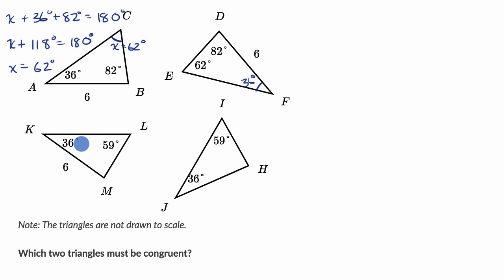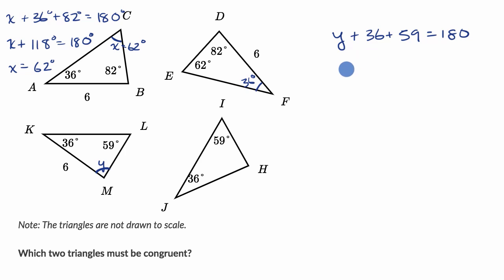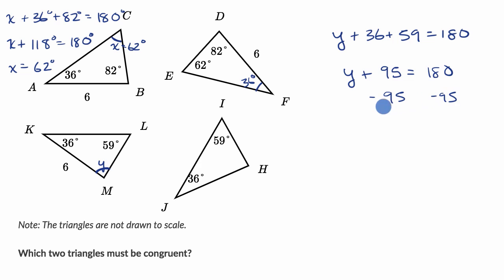Looking over here at triangle LMK, we have 36 degrees and 59 degrees — that looks like different angles. If we call the third angle Y, then Y plus 36 plus 59 equals 180. So Y plus 95 equals 180, and subtracting 95 from both sides gives Y equal to 85 degrees. So this angle is 85 degrees.